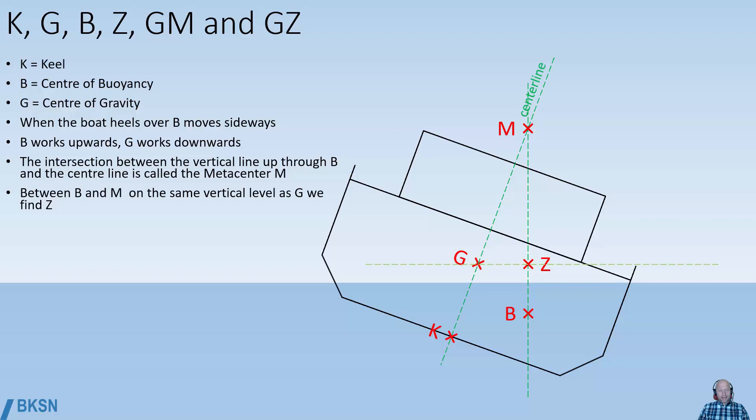Between B and M, at the same vertical level as the center of gravity, we find a point which is abbreviated Z. There's no name, it's just called Z.